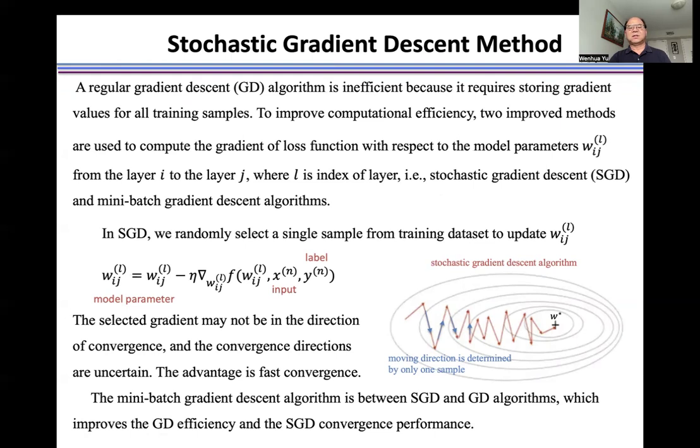We compute the gradient of the loss function with respect to the model parameters w from layer i to layer l, where l is the index of layer. These methods are stochastic gradient descent (SGD) and mini-batch gradient descent algorithms.